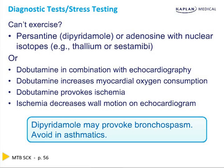Here is a high-level question: dipyridamole should not be used in patients who have chest pain and asthma, because dipyridamole is a phosphodiesterase inhibitor that increases cyclic AMP, and cyclic AMP provokes bronchospasm. Therefore, in an asthmatic, you should use dobutamine echocardiography or stress thallium, but not dipyridamole thallium.